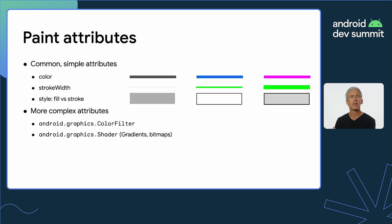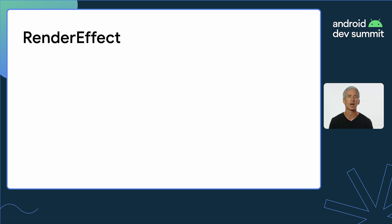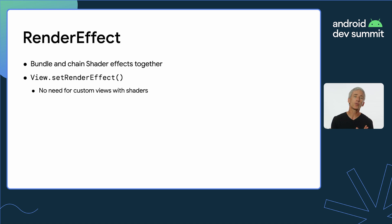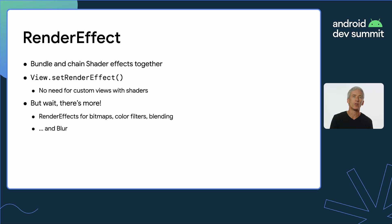But what if you want all of those attributes applied to the overall view? That's why we introduced the render effect API in Android 12. This allows you to collect all of that information together so that you don't have to have a custom view and go operation by operation. You're just telling the view these are the attributes that I want to apply. To do this, you call set render effect on a view, and you don't need to do all these things manually. There are several effects built into this API, like drawing from a bitmap, color filter, blending modes, and blur.